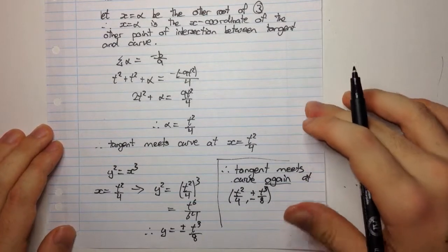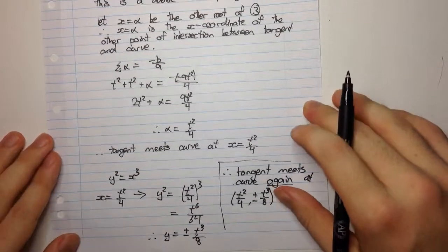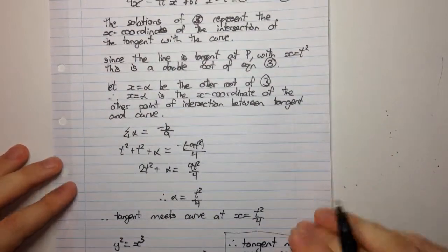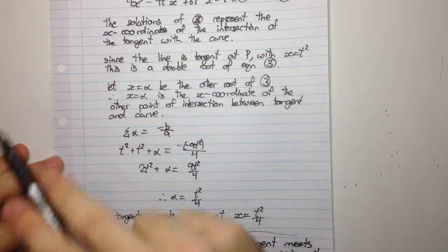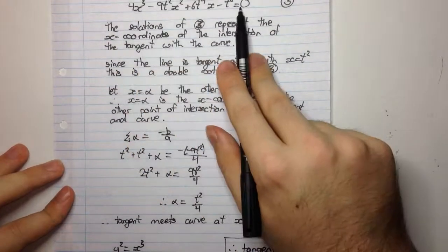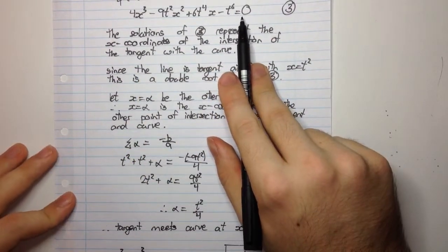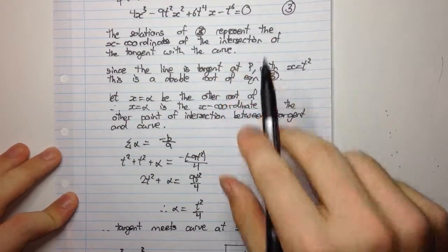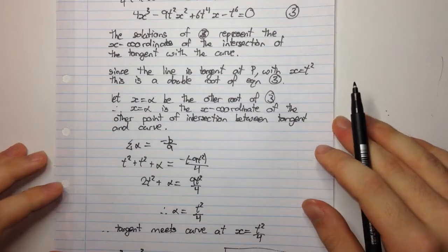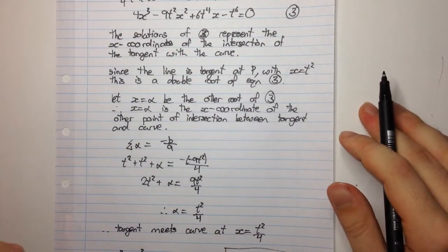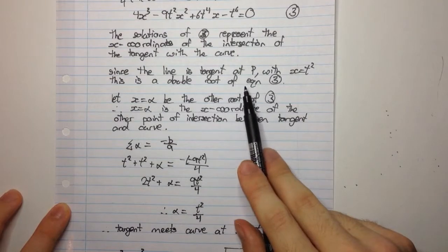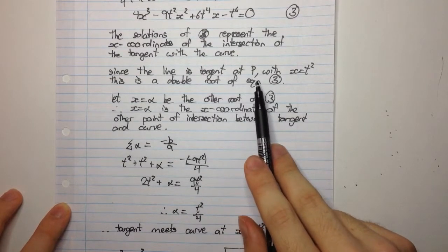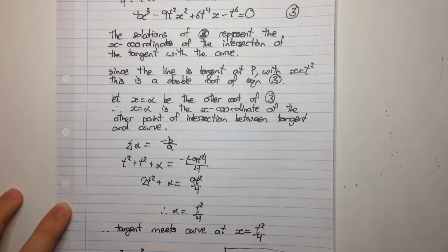That's the final answer. The key trick was to identify that the solutions of the polynomial equation represent the x coordinates of the intersections of the tangent with the curve, and then to identify that at a point of tangency we have a double root. Thanks for watching.